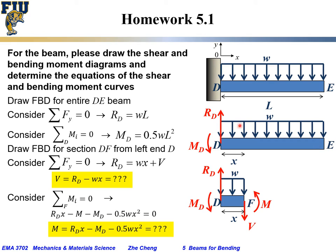The DE beam has uniformly distributed load W on the top, in units of Newton per meter. At the D end, we need a reaction force RD to counteract the distributed force W. At the same time, we also need a reaction moment MD at the D end to maintain equilibrium.